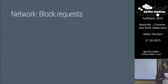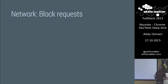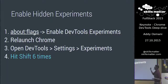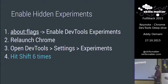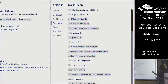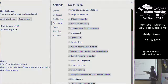Another thing we're working on — still needs a little polish but should be out soon — is the ability to block network requests. This is what we call a hidden experiment. Enabling hidden experiments requires going into about:flags, relaunching Chrome, then hitting shift six times. When you enable hidden experiments, you get highlighted blocks indicating features we're working on. Request blocking is the one you'll want.